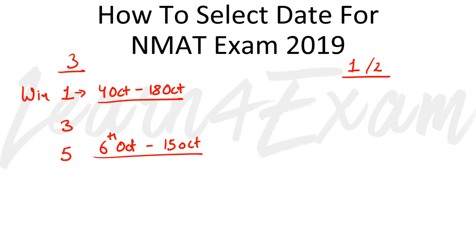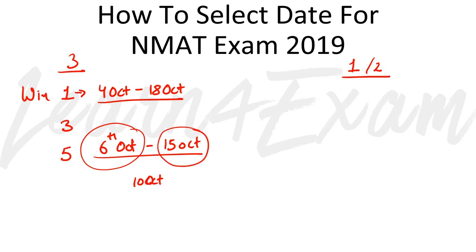If your mock scores — without guesswork — are coming at 210 or above, take a date around the earlier part of that range. If your scores are somewhere between 192 and 210 without guesswork, take a date around 10th October. And if your score is below 190 or above 210, these are still the recommended dates for you.